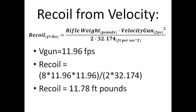Next, we convert that to the recoil energy of the gun. We take the rifle weight of 8 pounds, multiply by the gun velocity of 11.96 squared, and divide by 2 times the gravity constant of 32.174. That gives us 17.8 foot-pounds of recoil — that's our estimated recoil for that load.